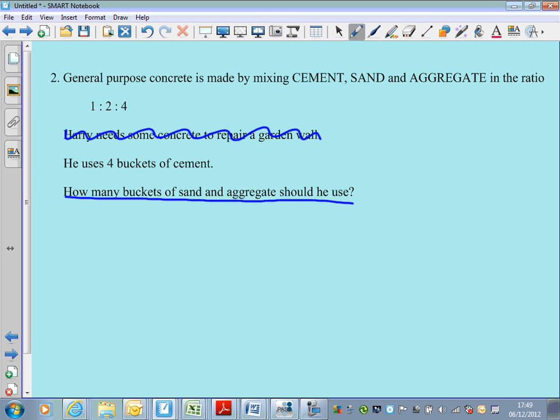Okay, sand and aggregate. Aggregate, in case you're wondering, is just like a mixture of gravel and stones and rocks that's used to mix up concrete along with the other things, cement and sand. So it's an ingredient, if you like, for concrete. Okay, so cement, sand and aggregate. Let's do what I said. Let's write down cement, sand, aggregate. Initials are fine, since they're all different letters.